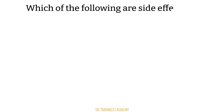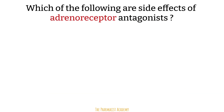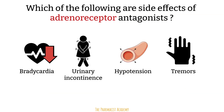Which of the following are side effects of adrenoreceptor antagonists? Adrenoreceptors are part of the fight or flight, or sympathetic, division of the autonomic nervous system. In this case, the drug is antagonizing the receptors, meaning decreased activity of fight or flight — so we get the opposite effects. We should see a reduction in heart rate, increased urination, and hypotension. Tremors occur when your body is stimulated, like in a fight or flight response, so that would be incorrect.